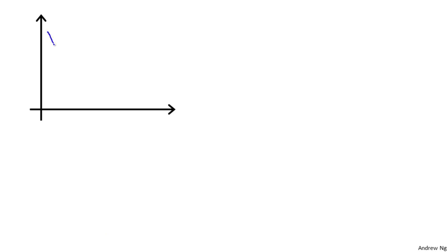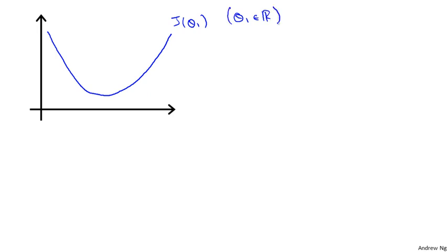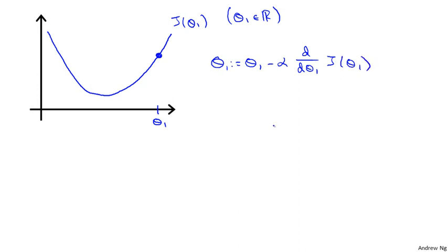Here's my function j of theta one, where theta one is a real number. Let's say I've initialized gradient descent with theta one at this location, so we start off at that point on my function. What gradient descent will do is update theta one as: theta one minus alpha times d/d theta one of j of theta one.